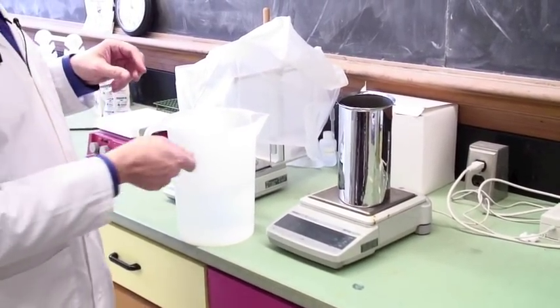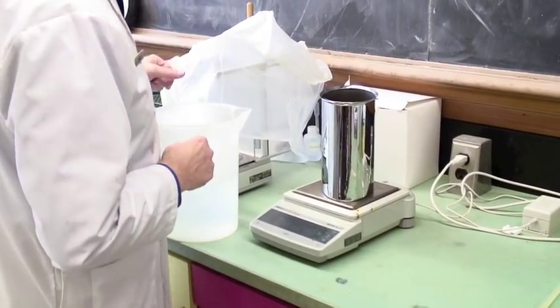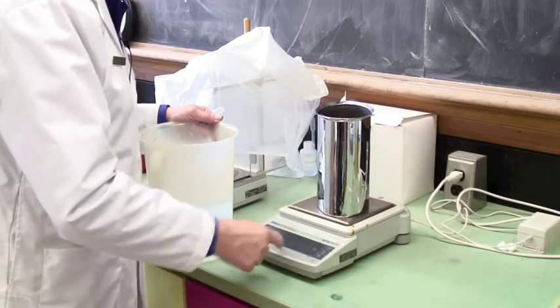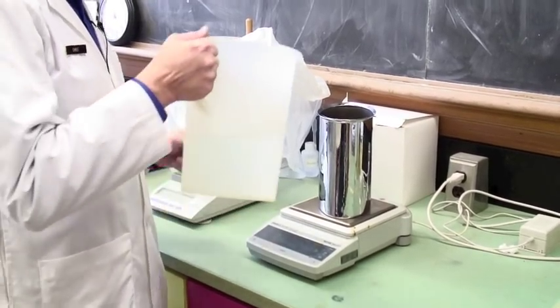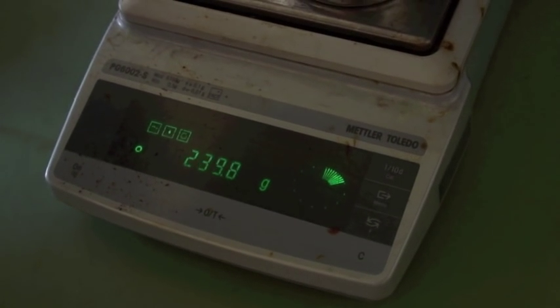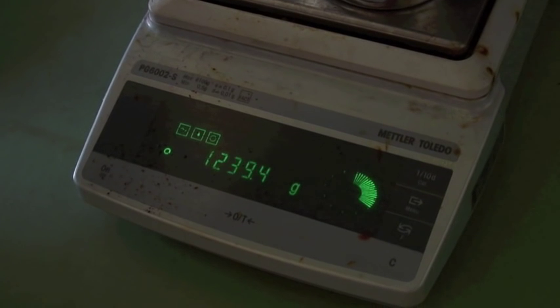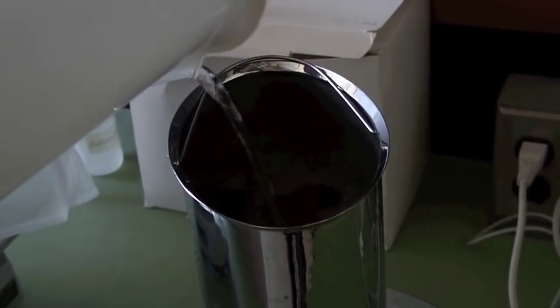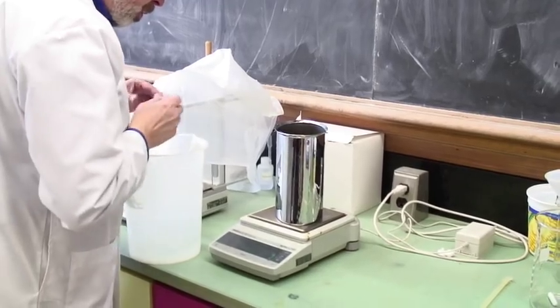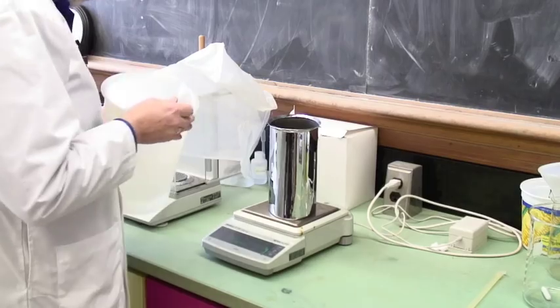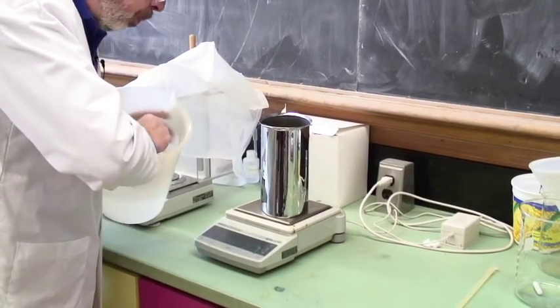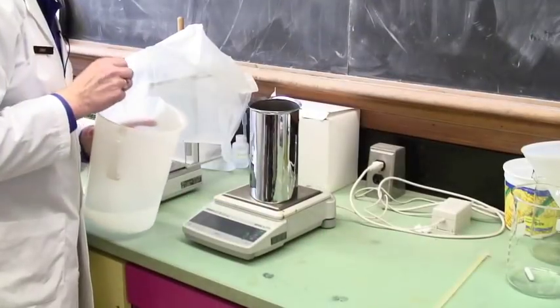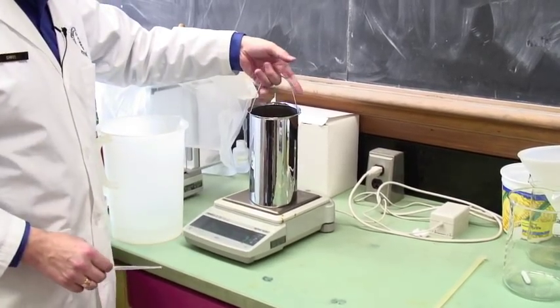To weigh this out you need a high capacity balance. We've only got one of these and it will weigh up to six kilograms. You need exactly two kilograms of water. Put the bucket on and hit the tare button so it goes to zero, and then first of all just pour. Add the last bit by dropper so that you can get to exactly two thousand point zero. We've now got the appropriate charge in the water bucket for the calorimeter.